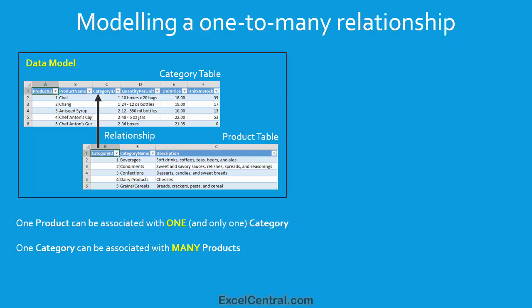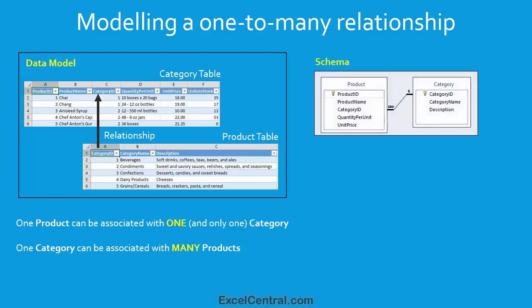When you work with a relational database, you'll normally be given a copy of a schema. A schema is a sort of roadmap, defining all of the tables and the relationships between them. Let's look at the schema you might be given for this database. This shows the Product table, the Category table, and the relationship between them.